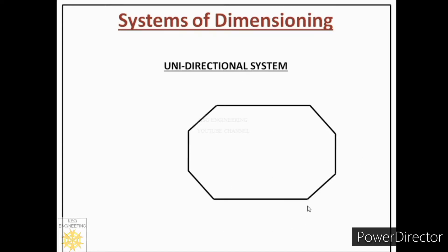First, we will talk about horizontal dimensions. We will draw extension lines, then between those two extension lines we will place the dimension line followed by closed filled arrowheads. Now in the unidirectional system, the method for placing the dimension is different. The dimension should be placed at the middle of the dimension line, but here we place the dimension on the line by breaking it.